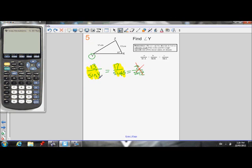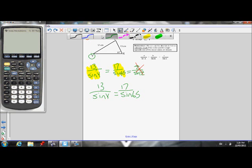So let's go ahead and set these equal. So 13 over sine Y equals 17 over sine 65. Get rid of the fractions by cross-multiplying.